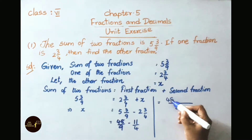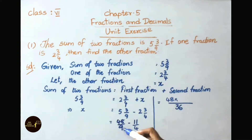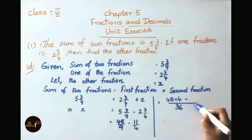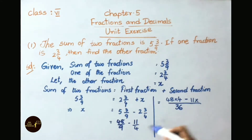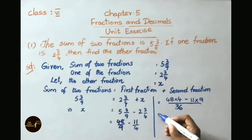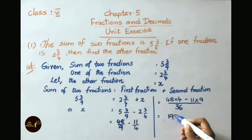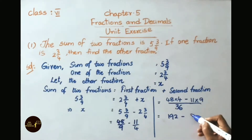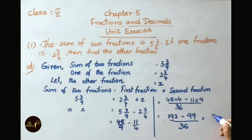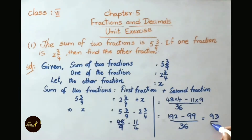Writing the numerators: 48 multiplied by 4 equals 192, minus 11 multiplied by 9 equals 99, all over 36. Now let us subtract: 192 minus 99 is 93 by 36.